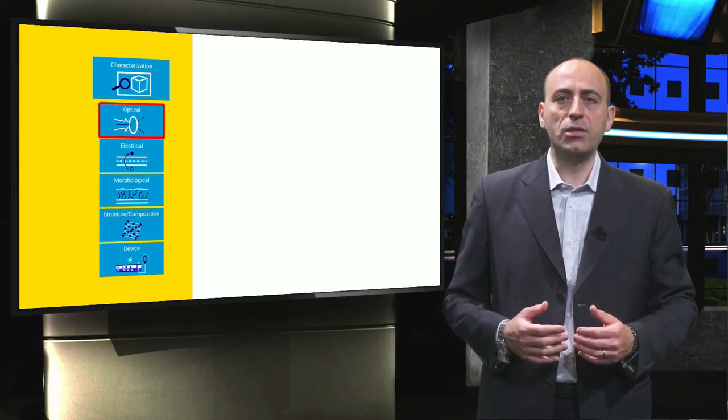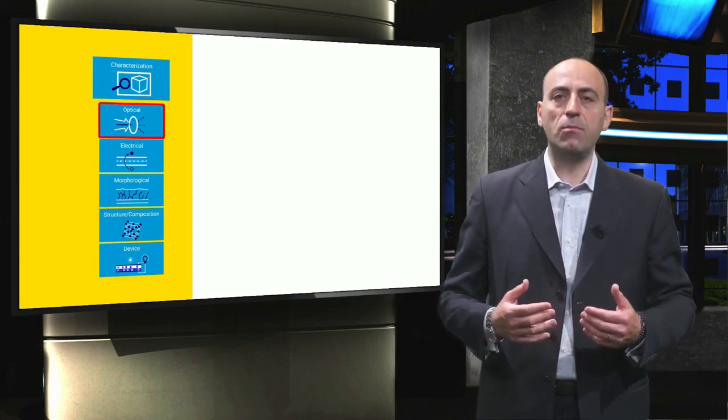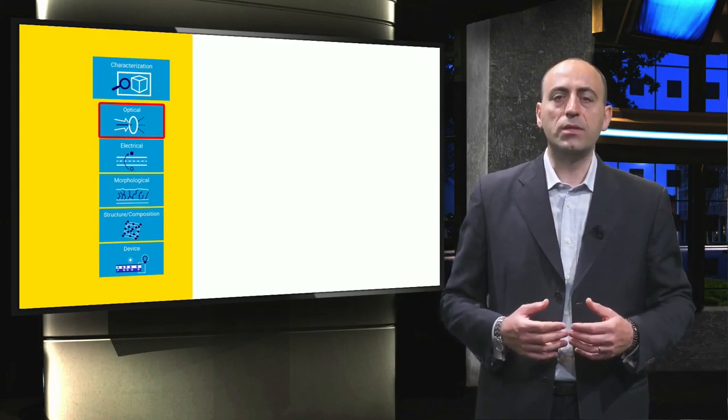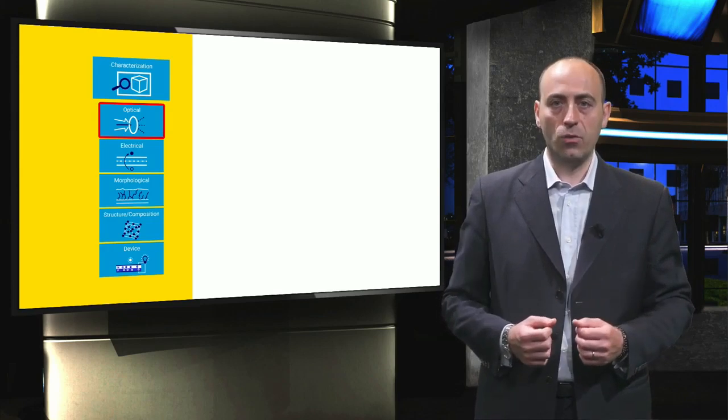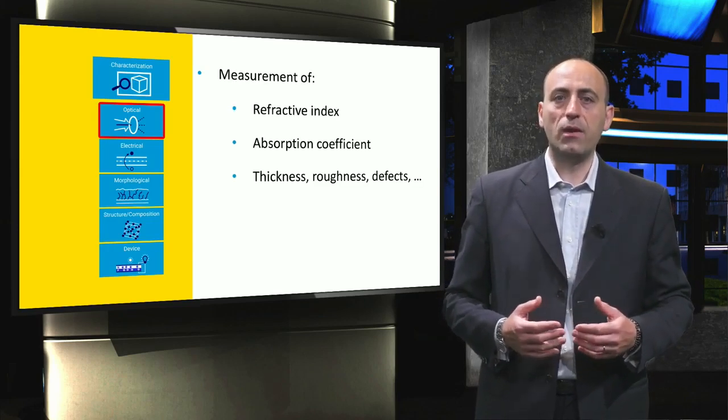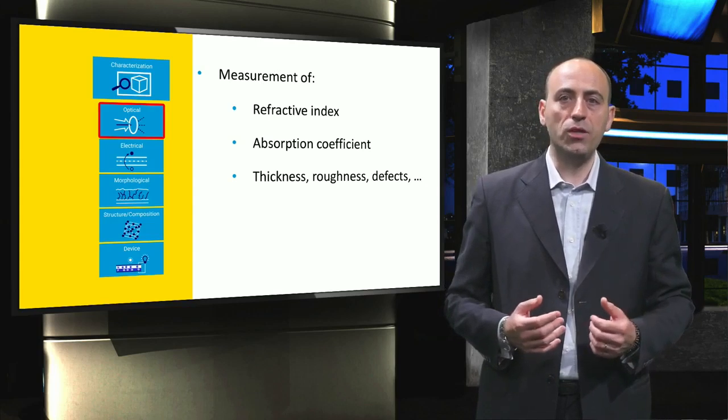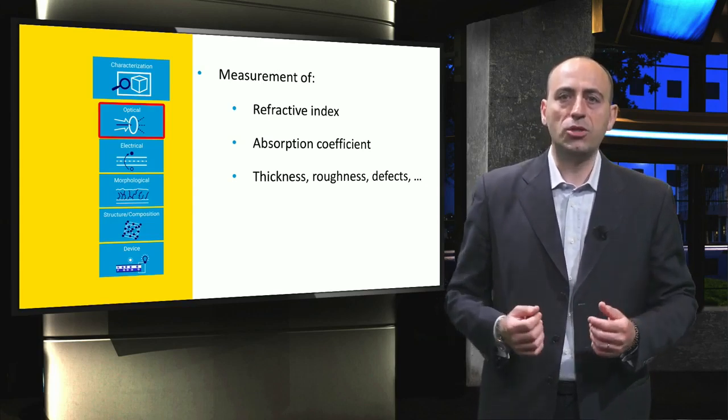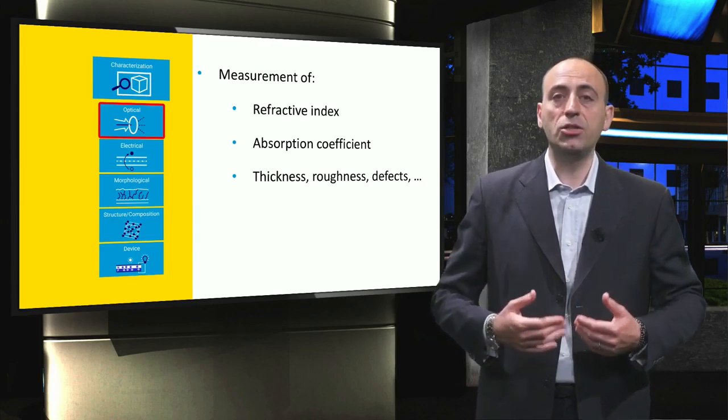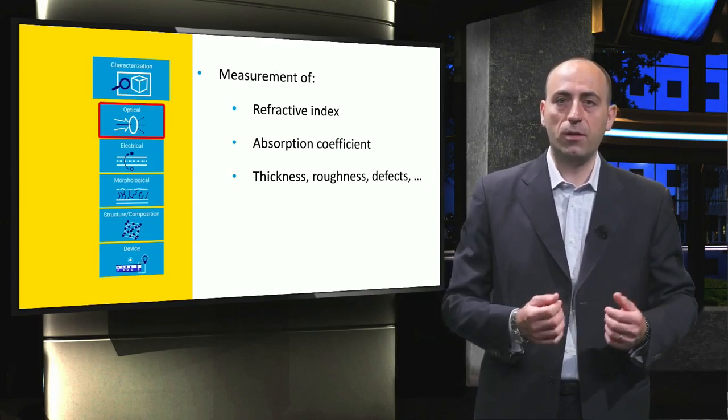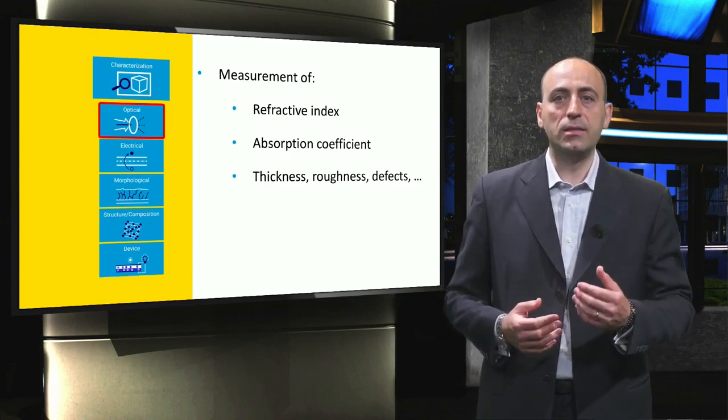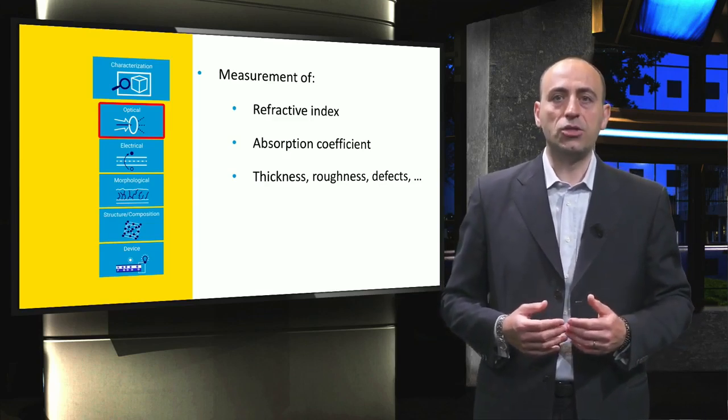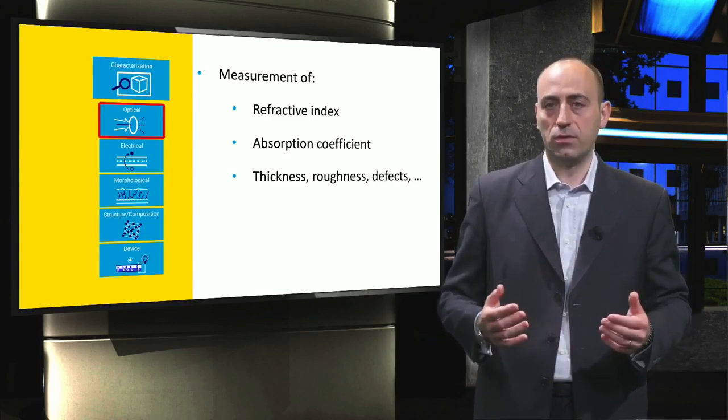Optical characterization includes techniques that determine the optical properties of materials. These can be used as inputs for optical simulations. The optical properties are mainly the refractive index and absorption coefficient of such materials. Moreover, these measurements can be used to obtain additional information on materials and films, such as the density of defects, the thickness and the roughness of thin layers commonly present in solar cells.